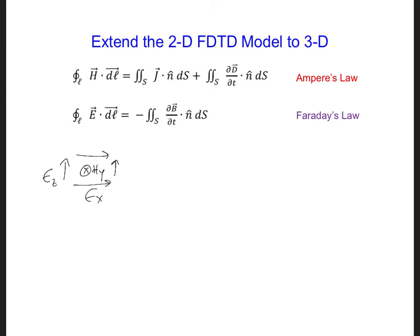Notice that from the integral form of Maxwell's equations, which I put at the top of this slide, we ultimately want to have four circulating magnetic field components around each electric field component in the grid, and four circulating electric field components around each magnetic field in the grid.